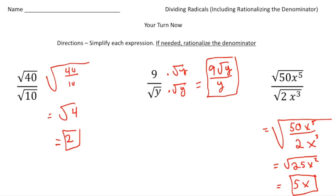Welcome back — let's see how you did with these practice problems. The first one: the square root of 40 divided by the square root of 10. That becomes the square root of 40 over 10, which reduces to the square root of 4, and the square root of 4 is 2. The second one required rationalizing the denominator — we had the square root of y on the bottom, so we multiplied both numerator and denominator by the square root of y, giving us 9 times the square root of y, all over y. For the last part, I put the numerator and denominator inside the same radical sign, reduced to get 25x squared, and the square root of 25x squared is just 5x.